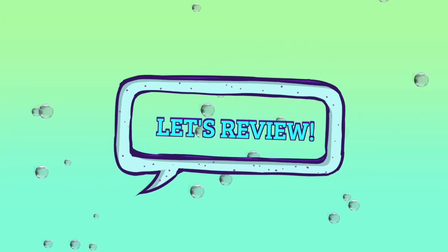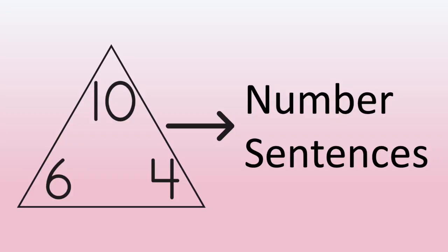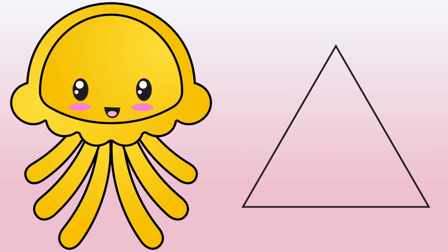Let's review what Janet figured out. A fact family is a group of numbers that go together to make addition and subtraction number sentences. A fact family triangle helps us define these number sentences. And with the family 6, 4, 10, we get four number sentences.